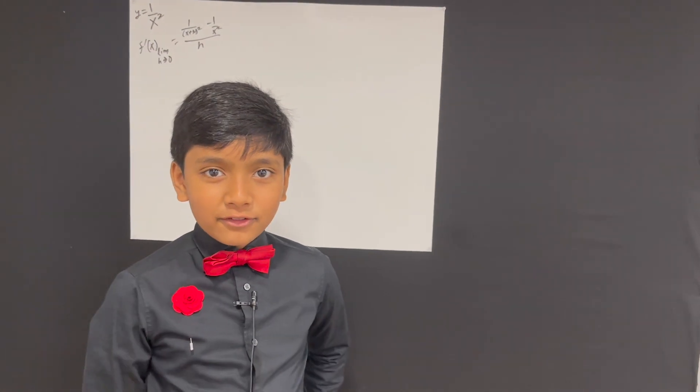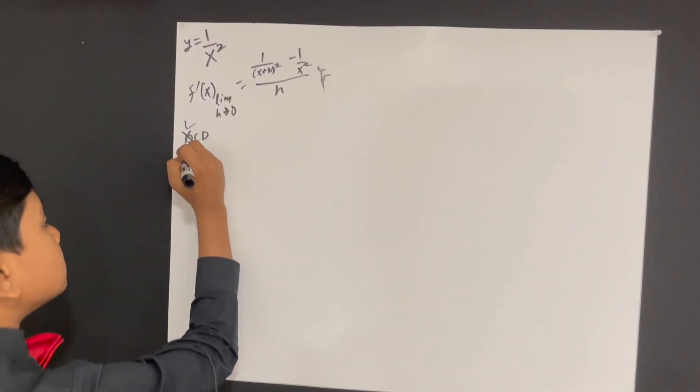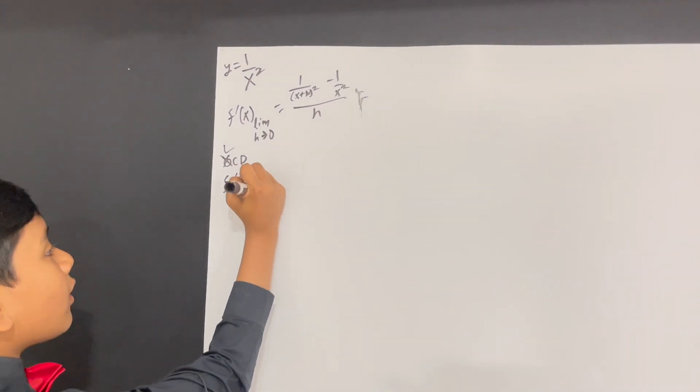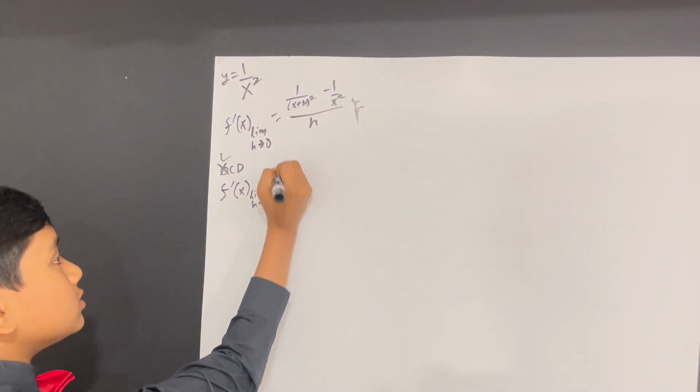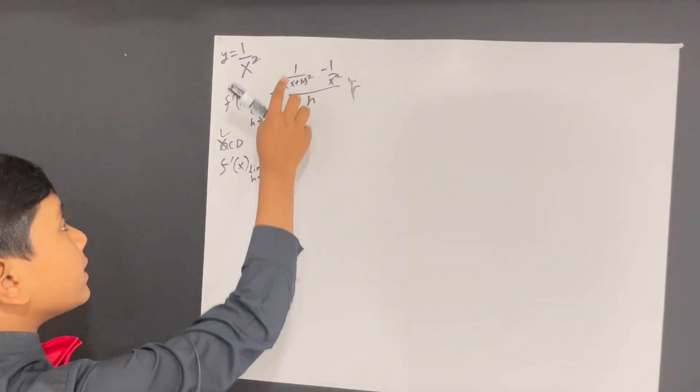Well, are you smarter than a fifth grader? If so, you should know what it is! So, this is f prime of x, with the limit as h approaches zero, and now, we're going to make a common denominator.